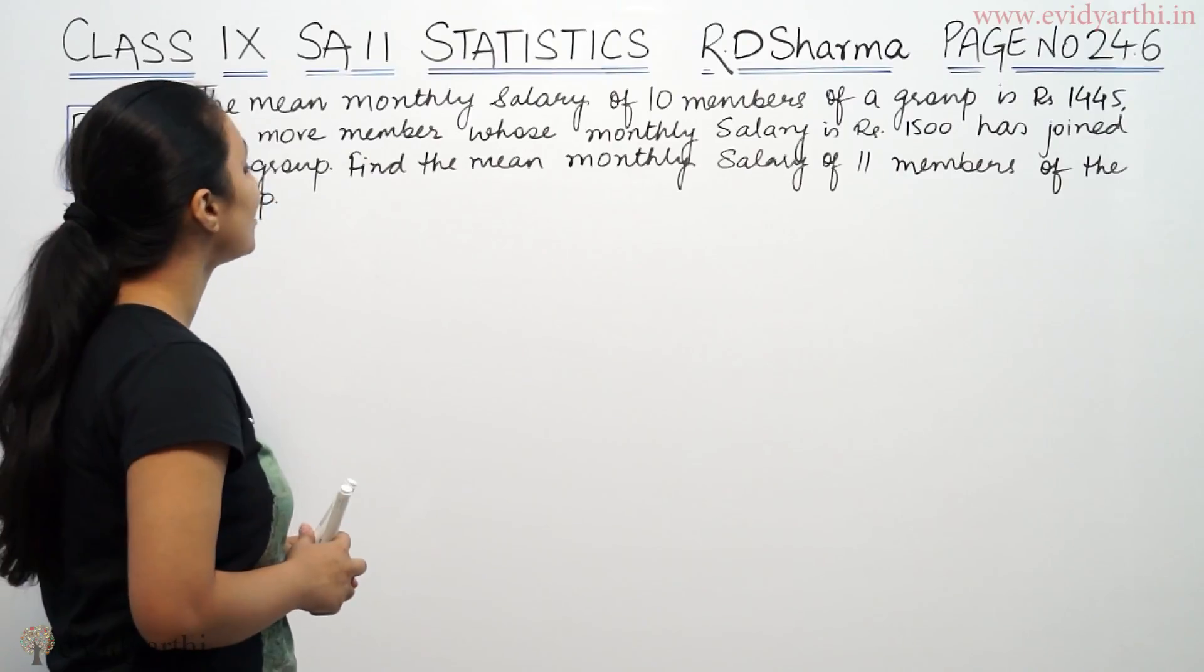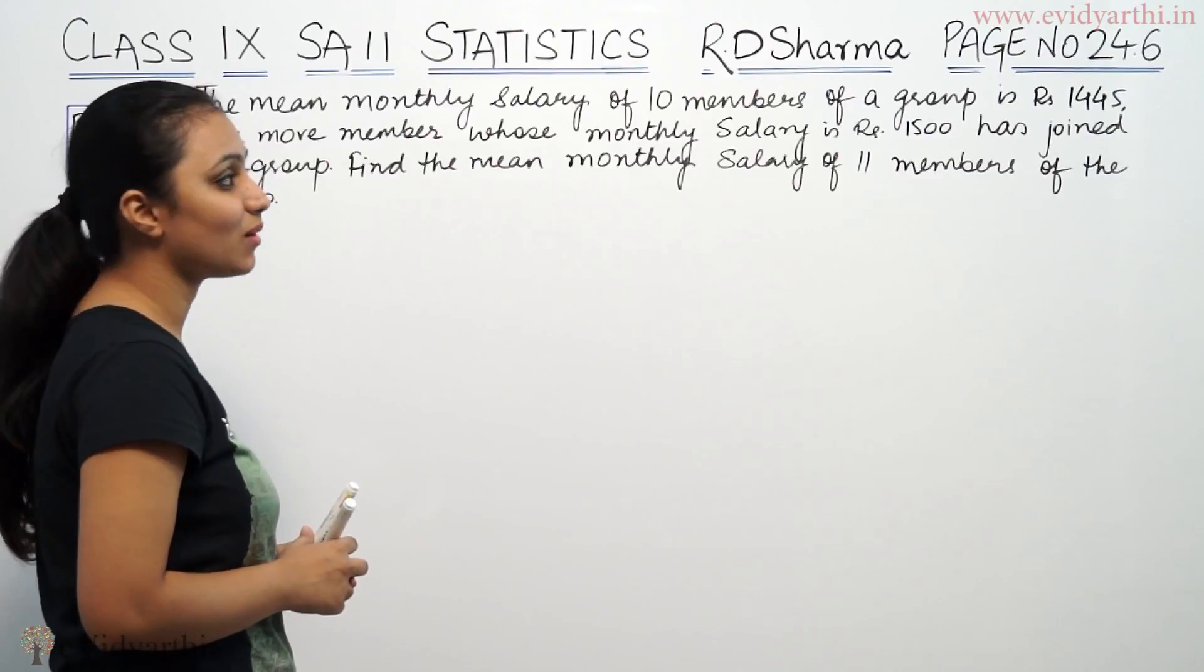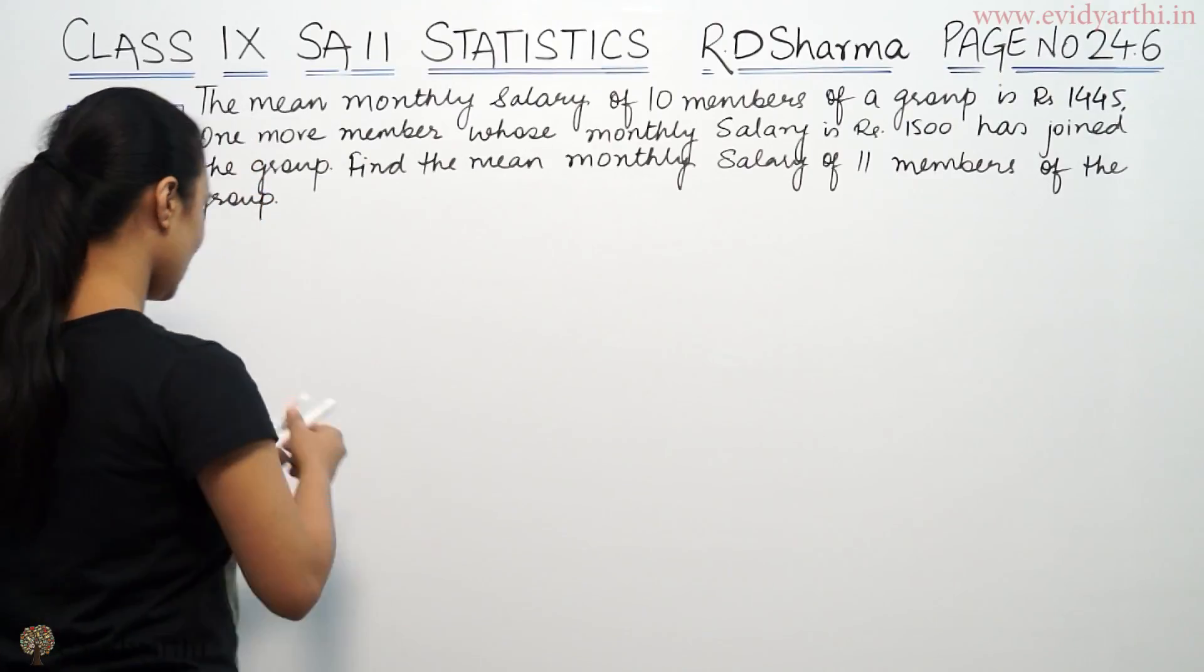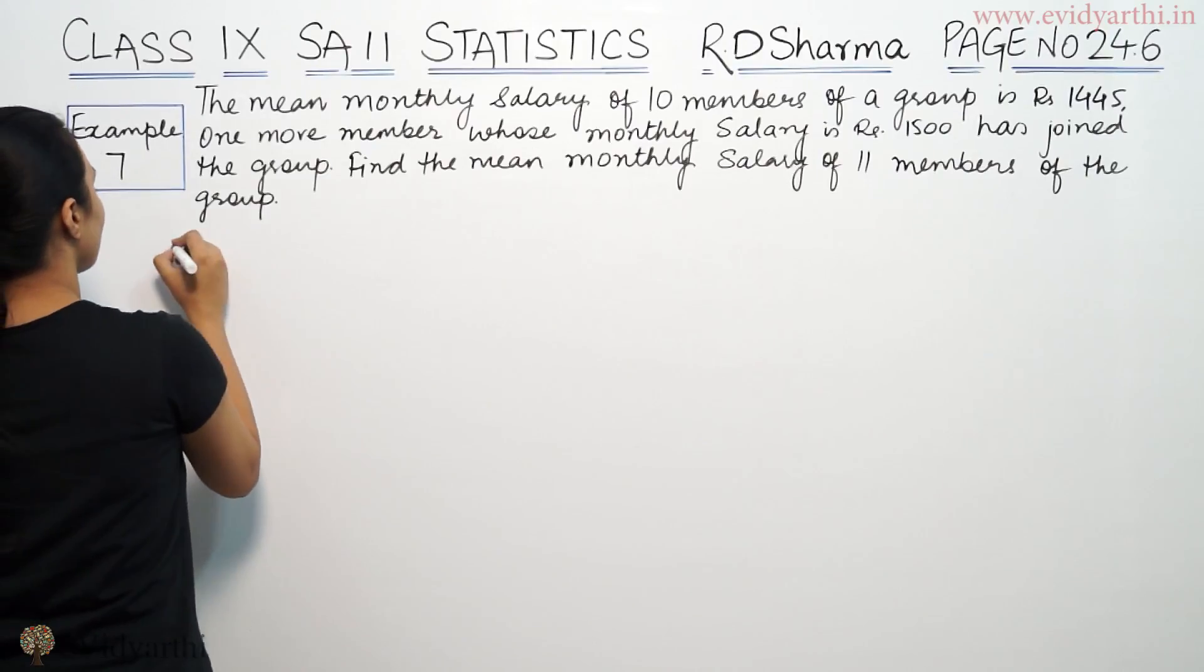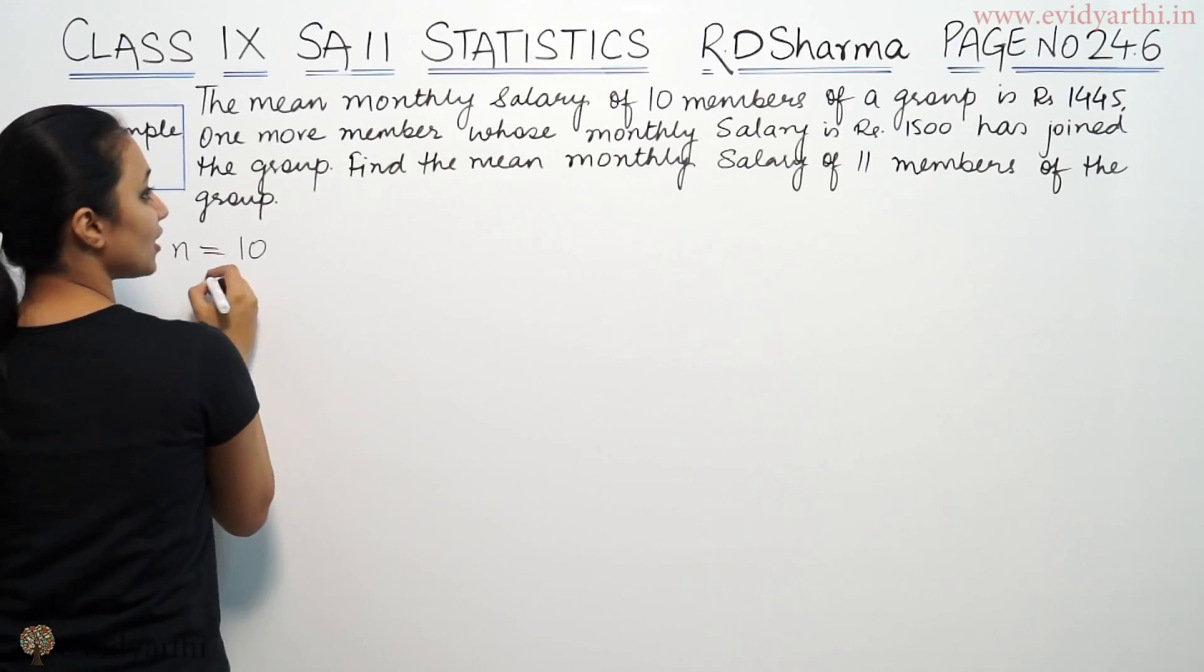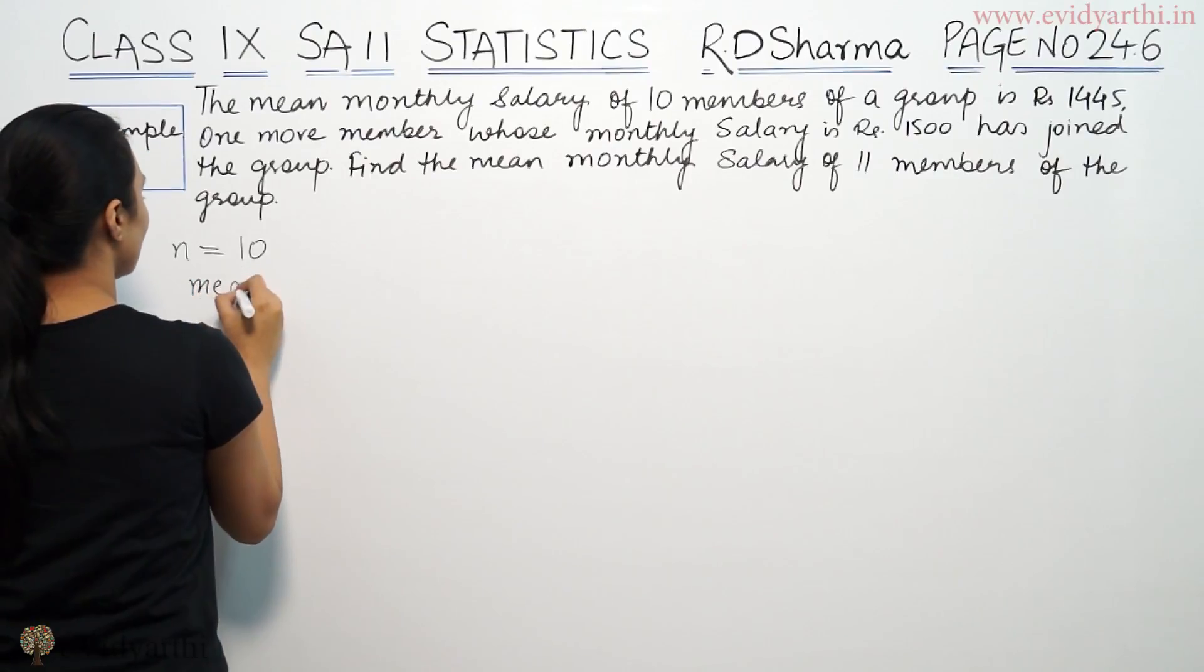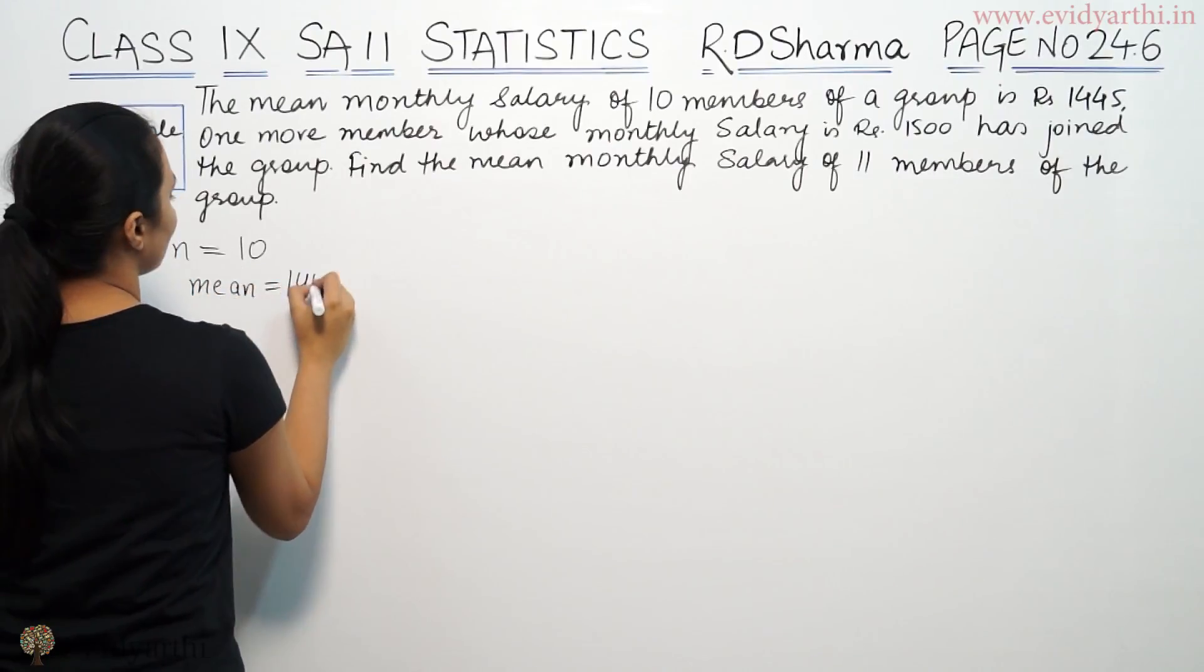First of all, the mean monthly salary is 1445, and the number of members is 10. The mean is 1445.